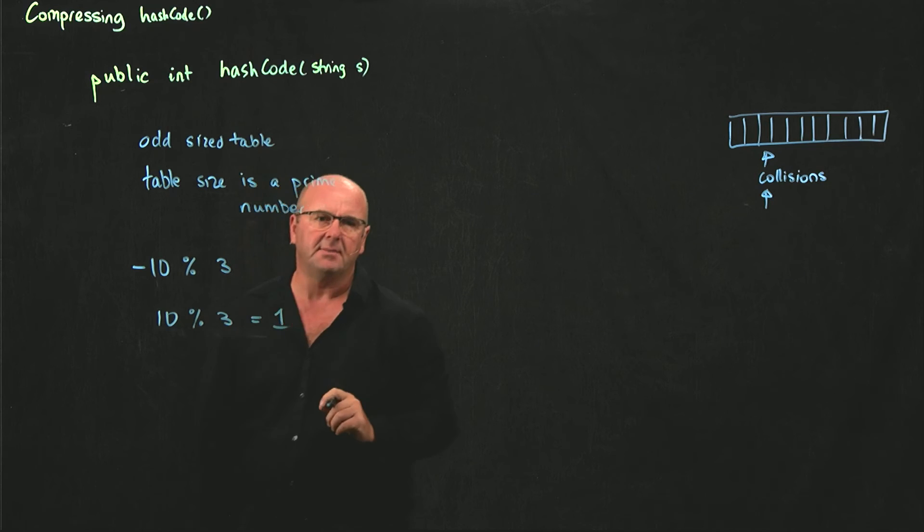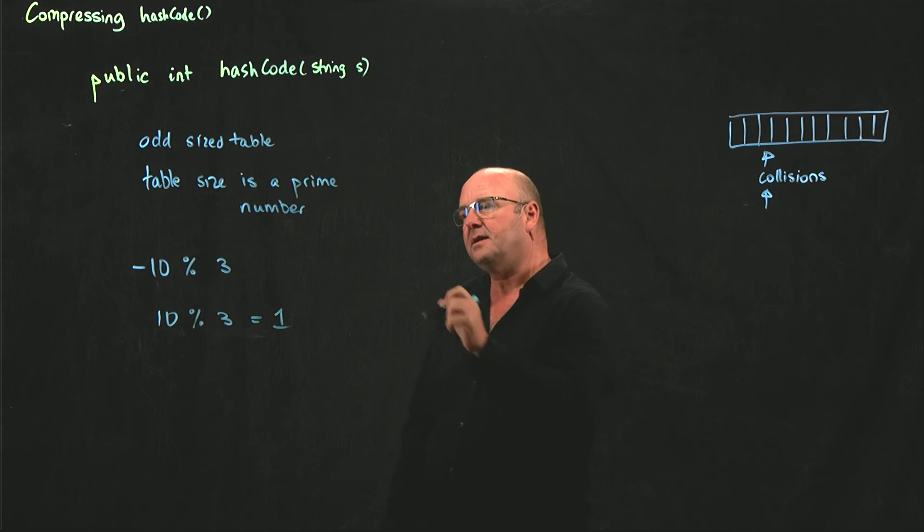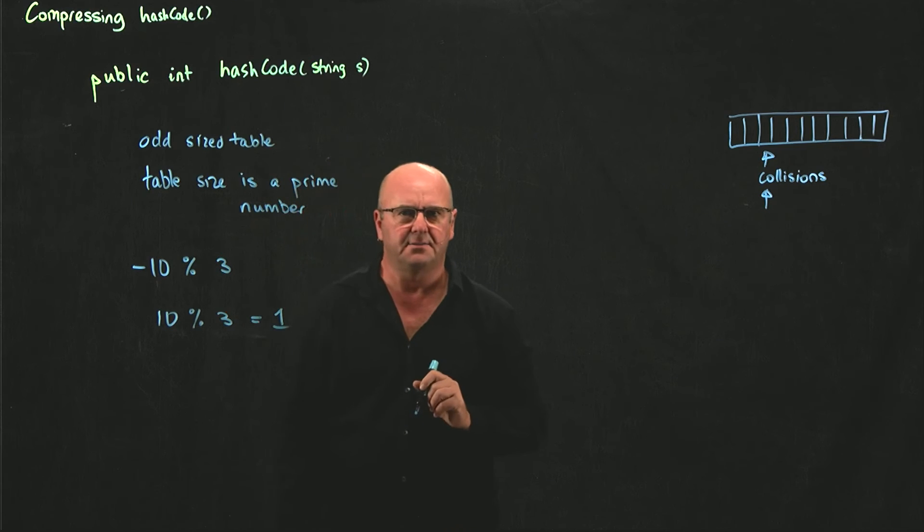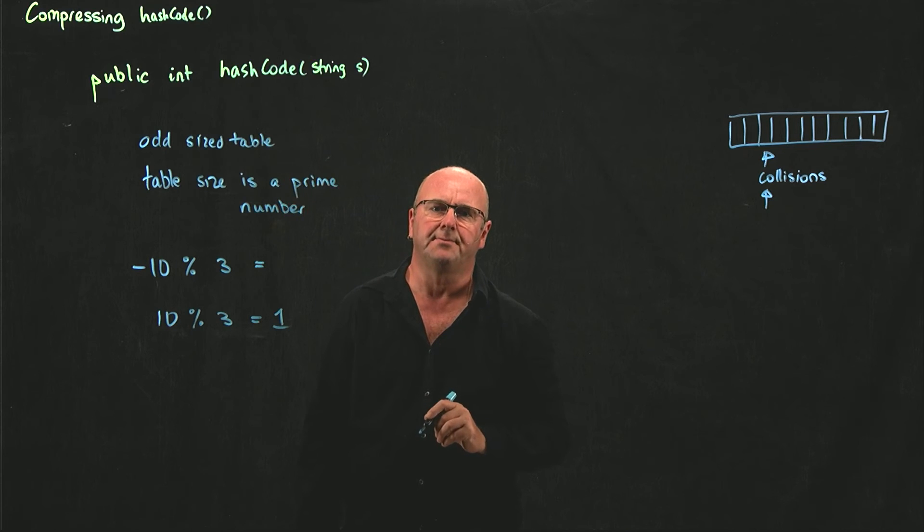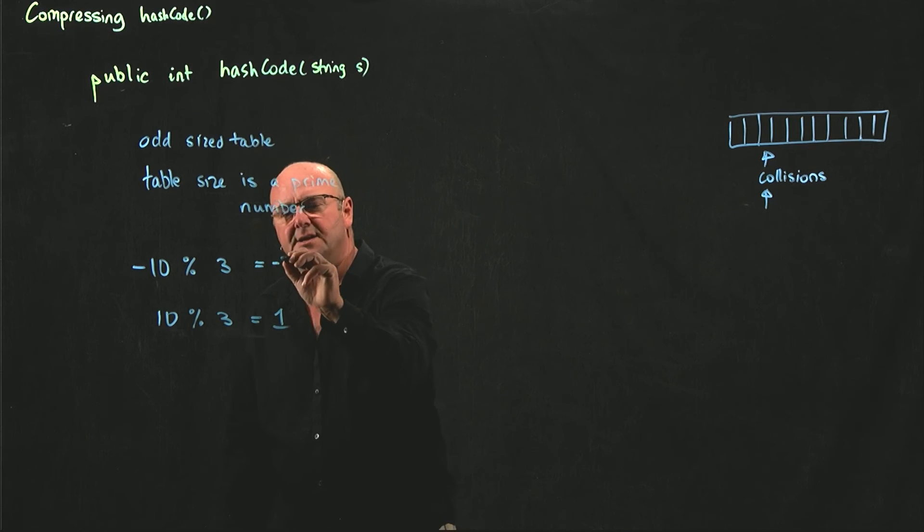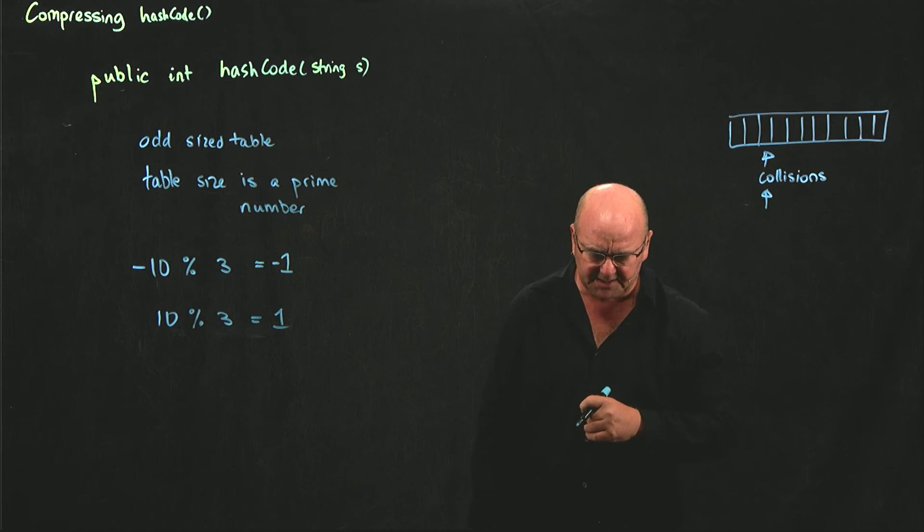That's 1, right? The remainder when you divide 10 by 3 is 1. The answer when you divide -10 by 3 depends on the specific language that you're using. And in Java, the answer to that is -1.